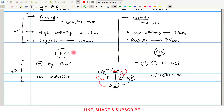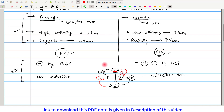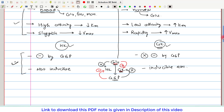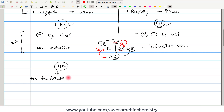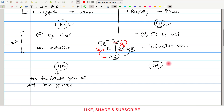Because of these differences, the entire role of Hexokinase and Glucokinase in glucose metabolism is different, despite catalyzing the same reaction. The main role of Hexokinase is to facilitate generation of ATP from glucose, whereas the main role of Glucokinase is not to generate ATP but rather to regulate the influx of glucose following a meal.